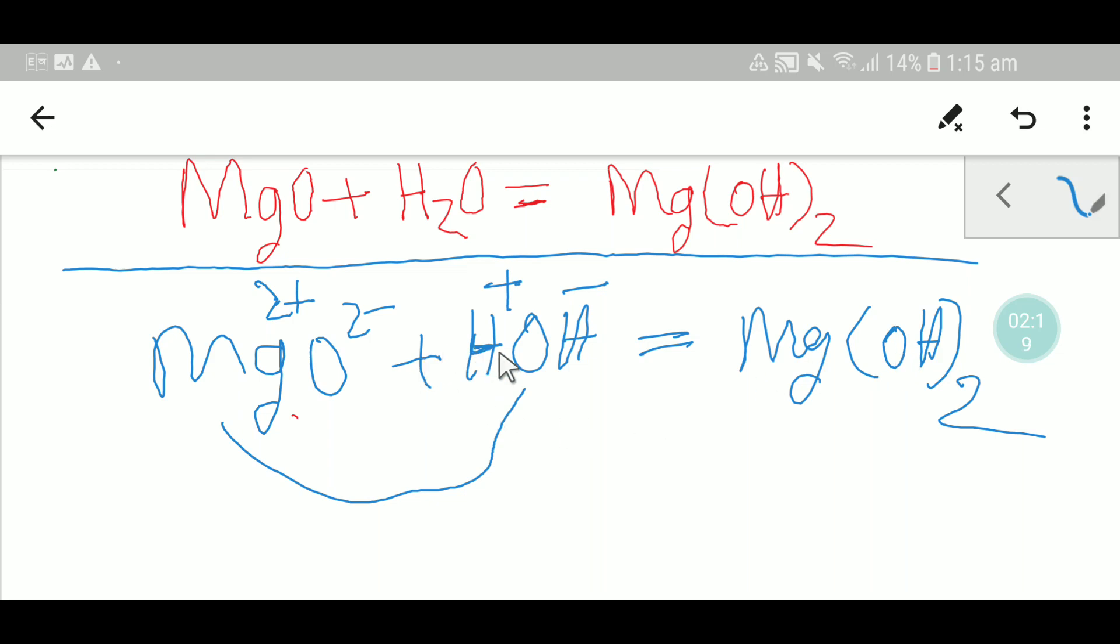Here oxygen two. And here oxygen one plus one, two. And here we have one magnesium, one magnesium. So everything is balanced.